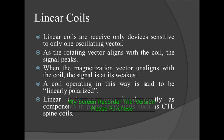Linear coils are receive-only devices sensitive to only one oscillating vector. As the rotating vector aligns with the coil, the signal peaks. When the magnetization vector misaligns with the coil, the signal is at its weakest. A coil operating in this way is said to be linearly polarized. Linear coils are now found mostly as components in phased array units, such as CTL spine coils — that is, cervical, thoracic, and lumbar spine coils.